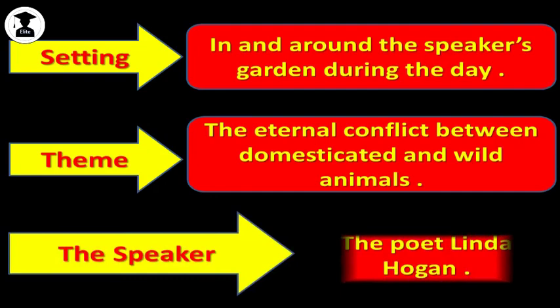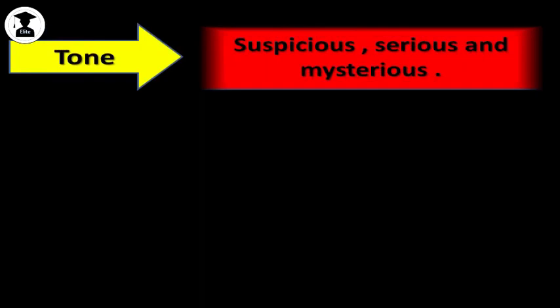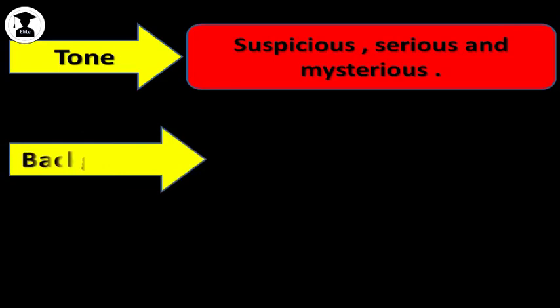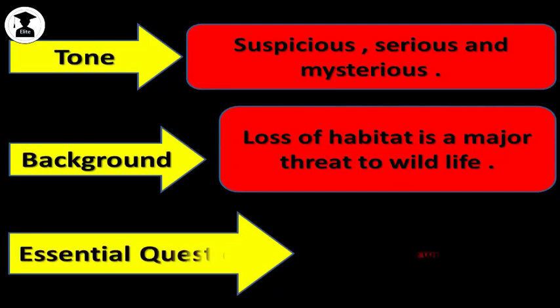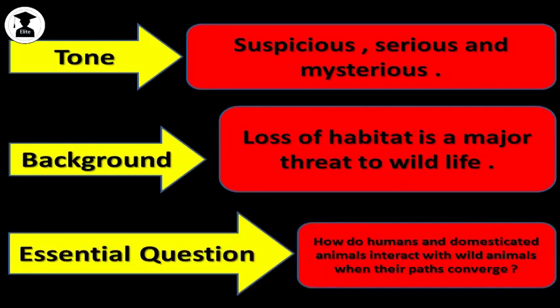Now let's start analyzing the tone of this poem. This poem has a suspicious, serious and mysterious tone. What is the background of this poem? It is about the loss of habitat. Do you know the word habitat? Yes, natural environment is a major threat to wildlife. Essential question: How do humans and domesticated animals interact with wild animals when their paths converge?